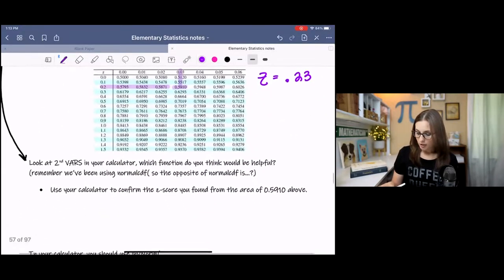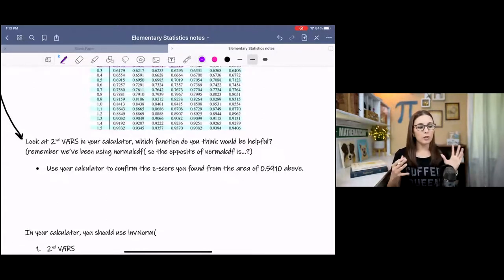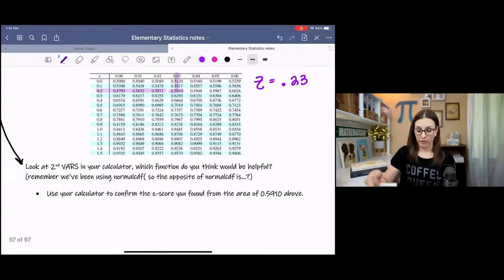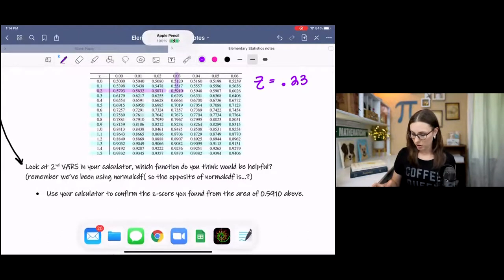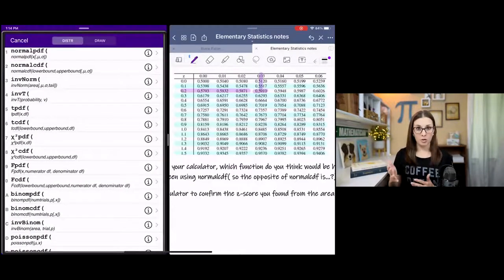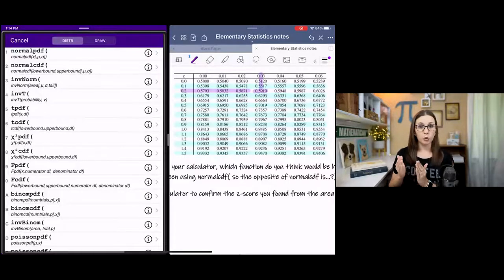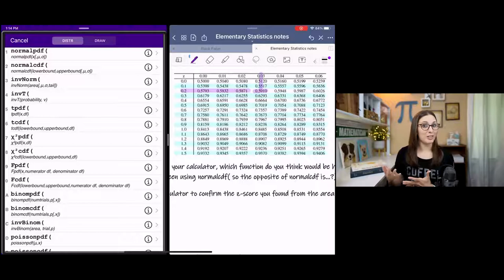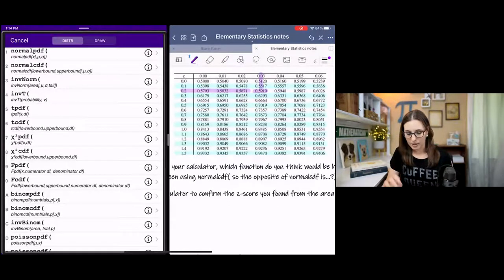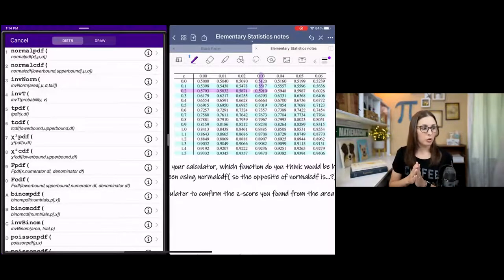So when we want to use our calculator instead, let's say we don't have a table, we do know it's a normal curve, but we're given opposite information. So instead of using normal CDF, we're going to use a different function. If you pull up your calculator and you go to second VARS, there's a menu there. And what we've used so far is normal CDF. So which one do you think would be the inverse or the opposite of that? So hopefully you can see that it's number three on my menu, inverse norm.